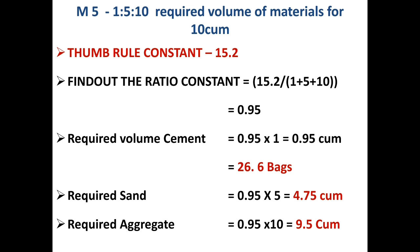For coarse aggregate: 0.95 × 10 = 9.5 cubic meters. Another simple way to calculate the required coarse aggregate is to simply multiply the volume of sand by 2 — so 4.75 × 2 = 9.5 cubic meters. This is the simple shortcut method.